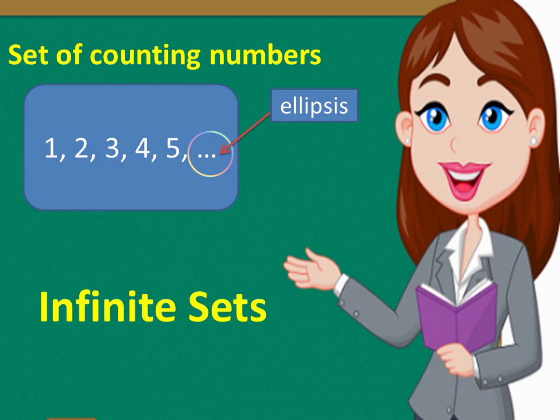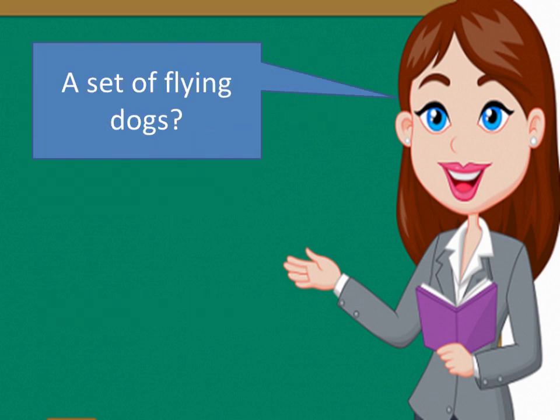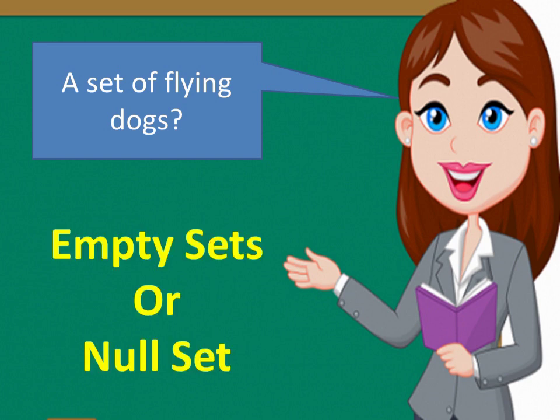Another example. A set of flying dogs. Did any one of you have flying dogs? None, of course. So, this set is an empty set because there is no element in the given set.